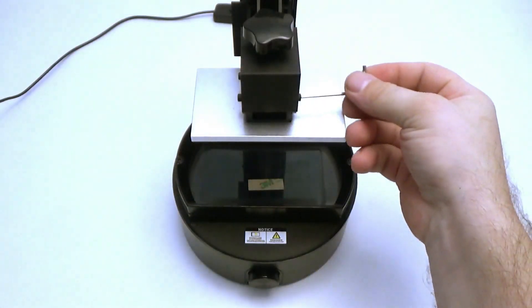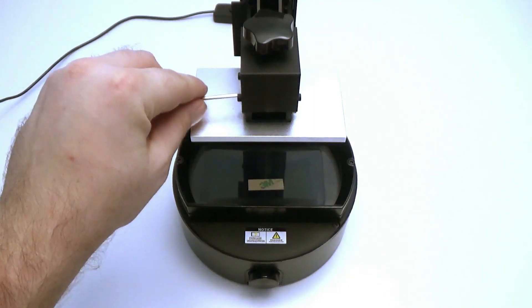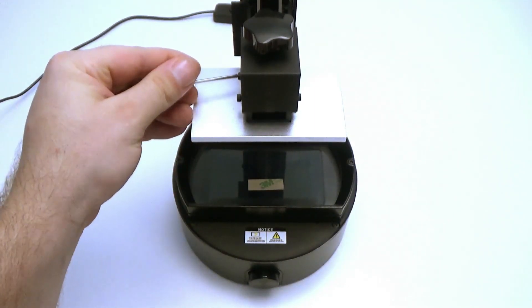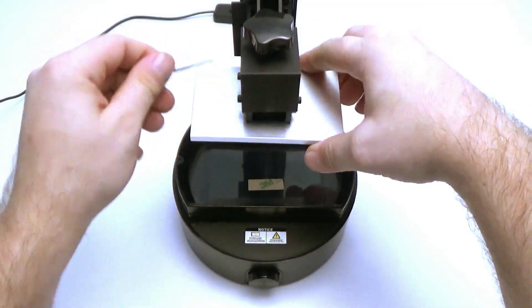To calibrate the printer, loosen all four screws of the build plate. Make sure that the build plate moves freely.